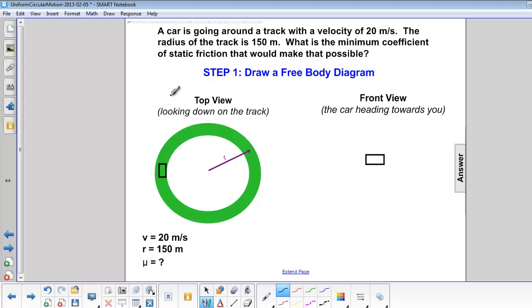So let's look at the direction of the acceleration and velocity. The acceleration is towards the center of our circle, and the velocity is tangent to the circle.